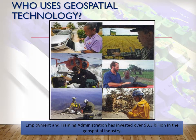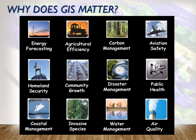Who uses geospatial technology? A lot of different industries. Almost every kind of industry I can think of uses GIS. The Employment and Training Administration estimates that $8.3 billion have been invested in geospatial technology within the last 10 years. This is just a sample of who uses GIS: energy forecasting — when I used to work at the Southern California Edison group in Rosemead, we used GIS for energy forecasting, mainly for weather forecasting to determine how much energy we need, and also for coastal management. There's public health, aviation, disaster management, and the list goes on and on.